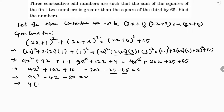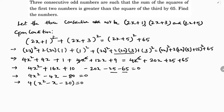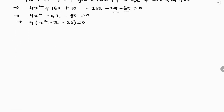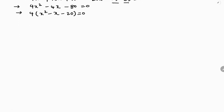Taking 4 as common factor: x²−x−20 = 0. So the equation to solve is x²−x−20 = 0.